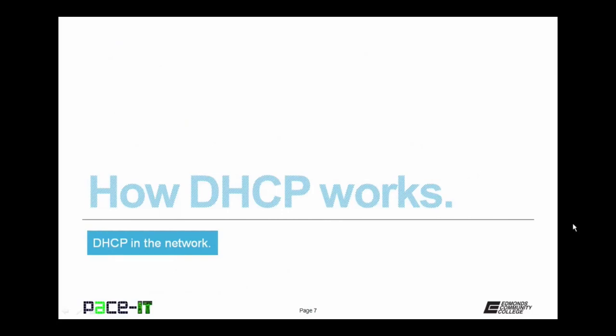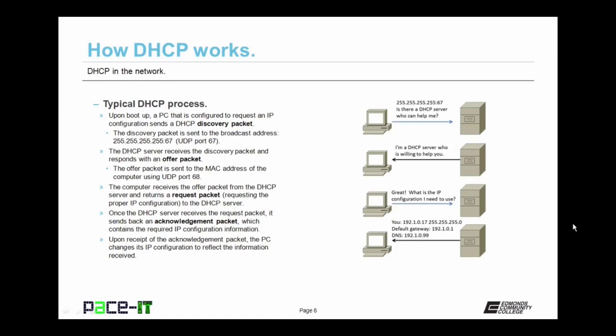Now let's move on to how DHCP works. Here is the typical DHCP process. Upon boot up, a PC that is configured to request an IP configuration sends a DHCP discovery packet. The discovery packet is sent to the broadcast address 255.255.255.255 on UDP port 67. The DHCP server is listening for that discovery packet. When the DHCP server receives the discovery packet, it responds with an offer packet — basically saying 'I'm here to help.' The offer packet is sent back to the MAC address of the computer requesting help on port 68.